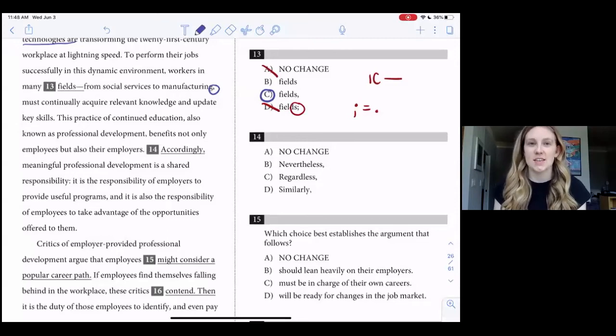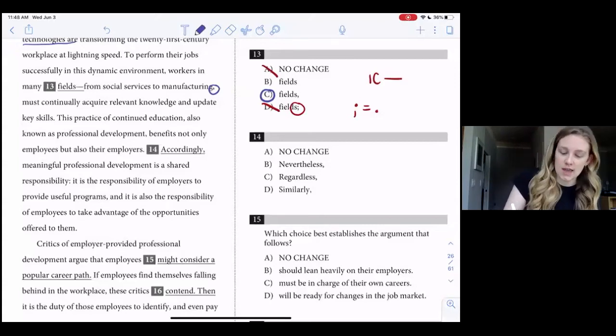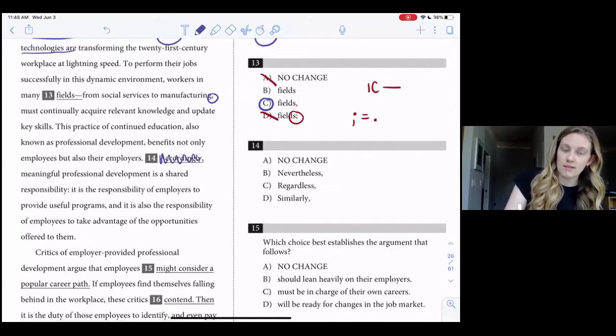So the next question we're going to look at is number 14. Now, this is a transition word question, and so what I'm going to do is I'm actually going to cross out the word that is already written in the passage for when I read this, and I will explain why as we go.